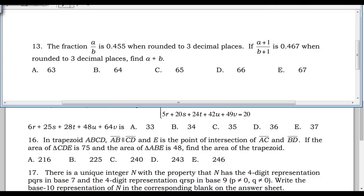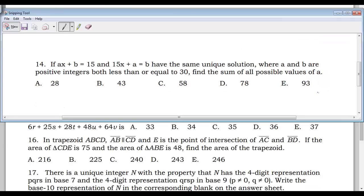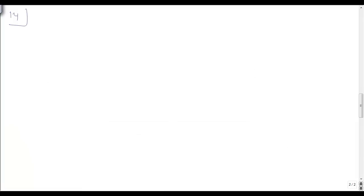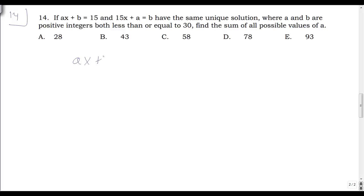On to number 14. If AX plus B equals 15 and 15X plus A equals B have the same unique solution, where A and B are positive integers both less than or equal to 30, find the sum of all possible values of A.